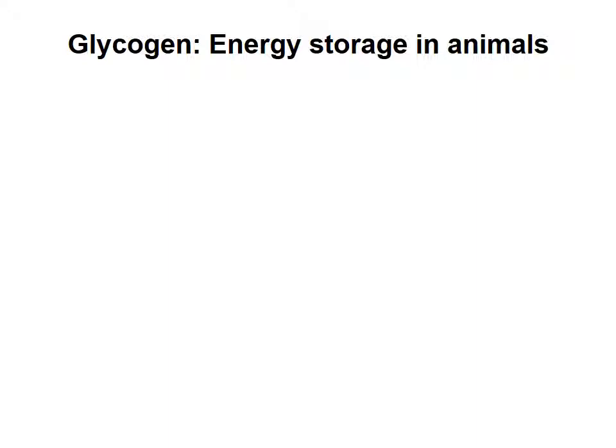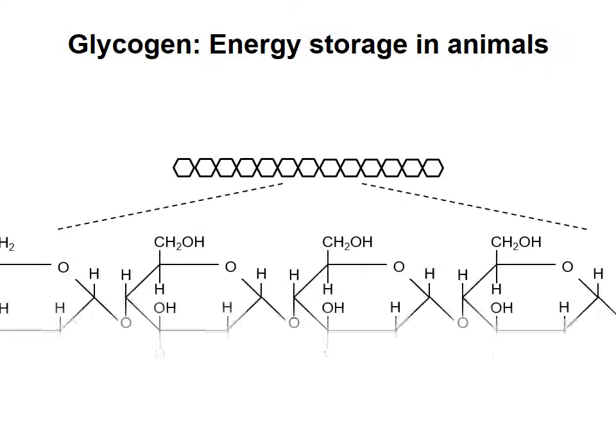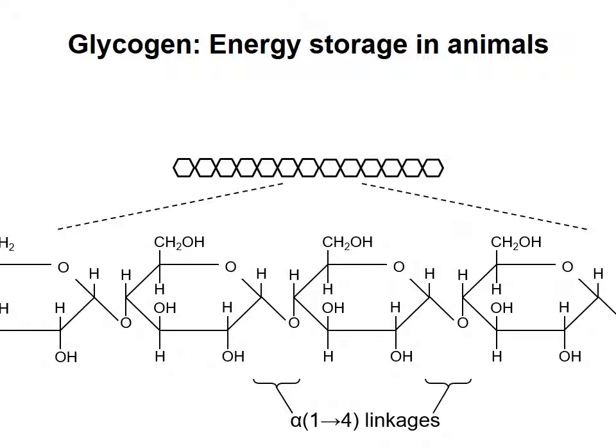Glycogen contains chains of 12 to 14 glucose monomers. These are joined via alpha-1,4 linkages, as shown. You can see that these linkages are 1,4 linkages because carbon-1 of one glucose monomer is joined to carbon-4 of the next glucose monomer.